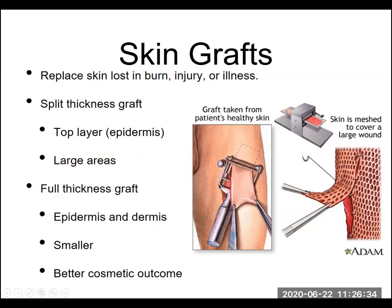An example of this — and it's actually an organ transplant — is skin grafts. If you have an individual that's had damage to their skin, maybe a burn, an accident where skin is scraped off, or an illness affecting their skin, you take a section of skin from another region of the body, run it through a machine that stretches it into a mesh so it can cover a larger area, and implant it as a transplant so it heals normally and reestablishes the skin.